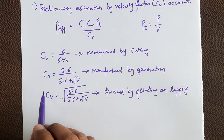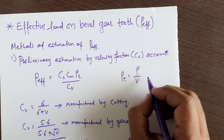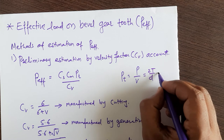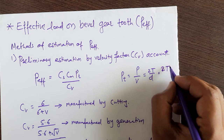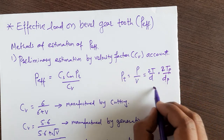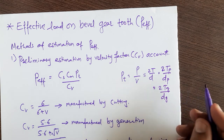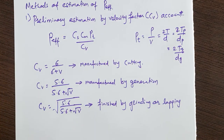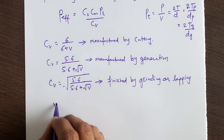PT can be found from power divided by velocity. If you have torque, PT = 2T / d. Specifically, PT = 2 × torque on pinion / dp, or PT = 2 × torque on gear / dg, where dp and dg are the pitch circle diameters of the pinion and gear respectively.